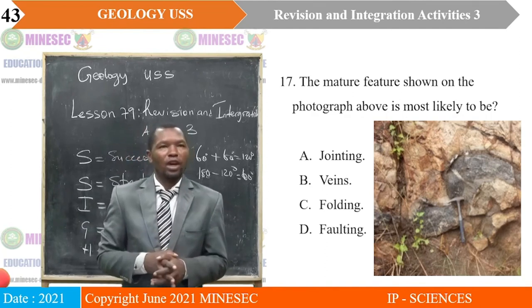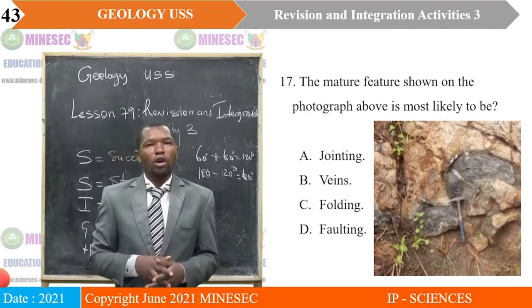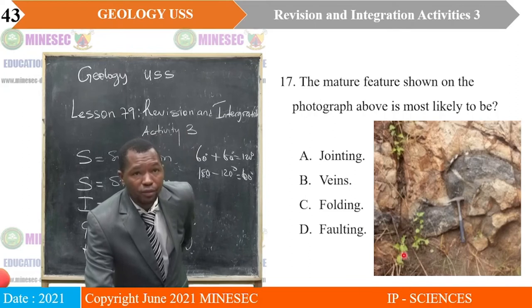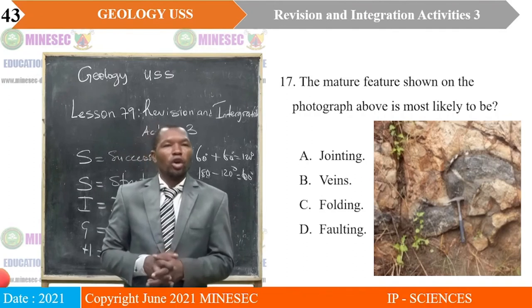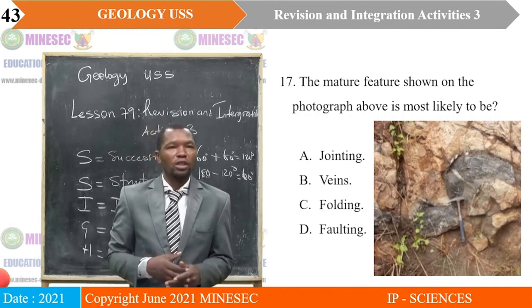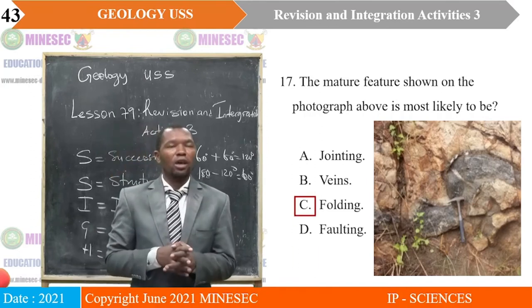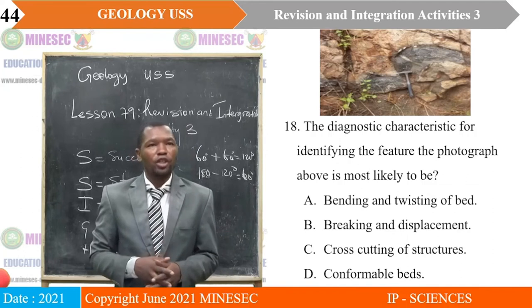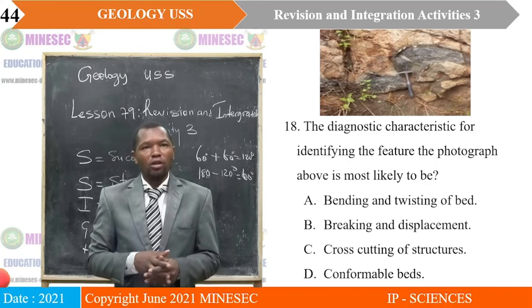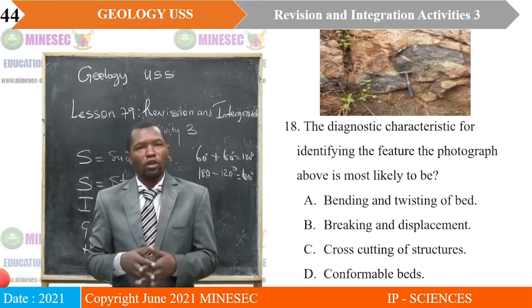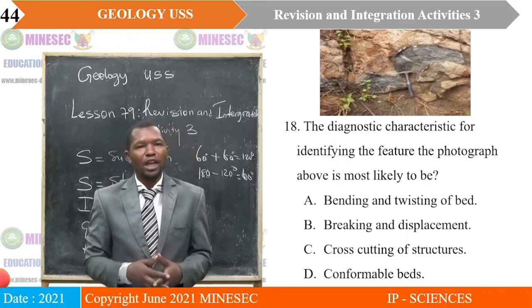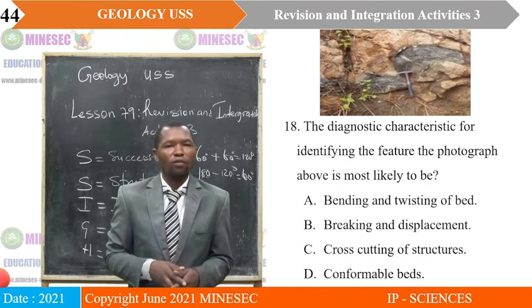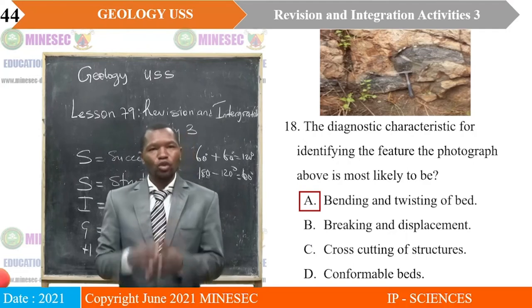Question 17 is on the photograph. The feature shown on the photograph is most likely to be — looking at the photo showing bending and twisting — A — jointing; B — faulting; C — folding; D — folding. The correct answer is C, folding, because there is bending and twisting. The diagnostic characteristic identifying the feature in the photograph: A — bending and twisting of beds; B — breaking and displacement; C — cross-cutting of structures; D — conformable beds. The correct answer is A, bending and twisting of beds.